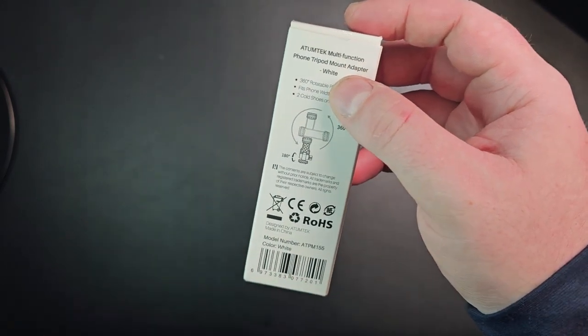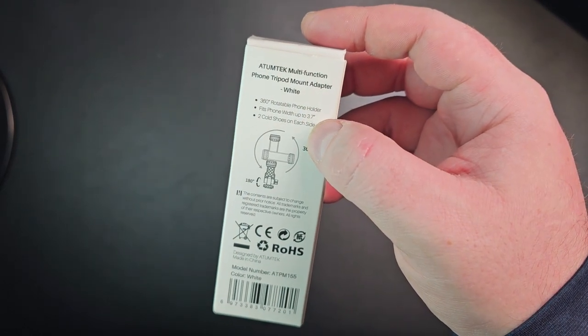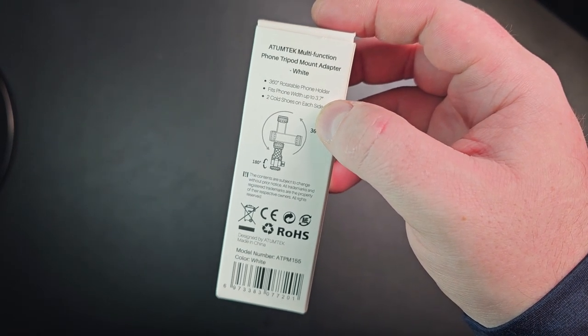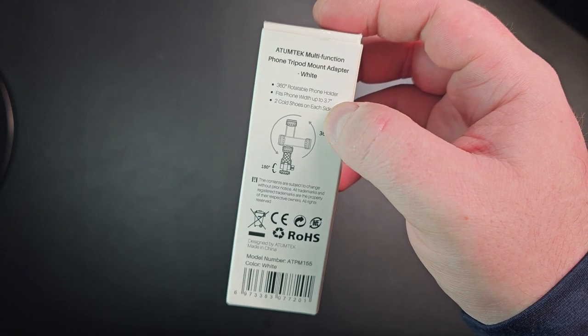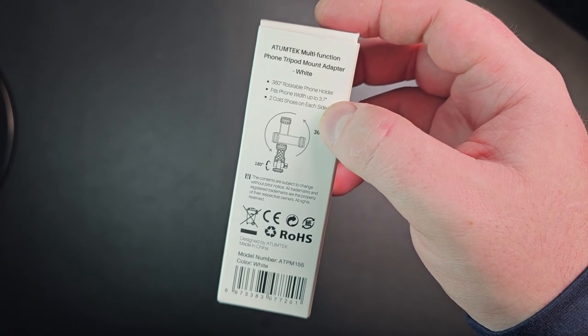And this is a multi-function phone tripod mount in white. It rotates all the way 360 and it fits phones up to 3.7 inches.